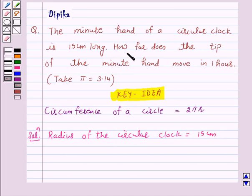Now we have to find how far does the tip of the minute hand move in 1 hour. Now in 1 hour, the minute hand of the clock will complete one whole circle.